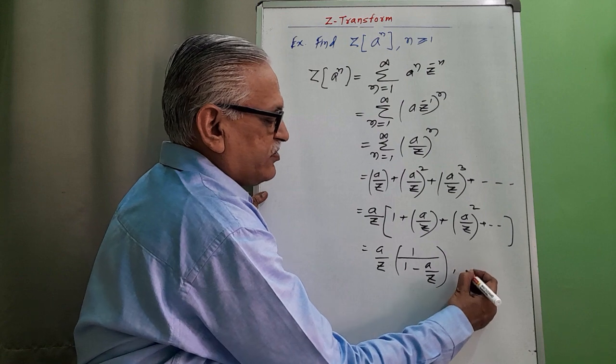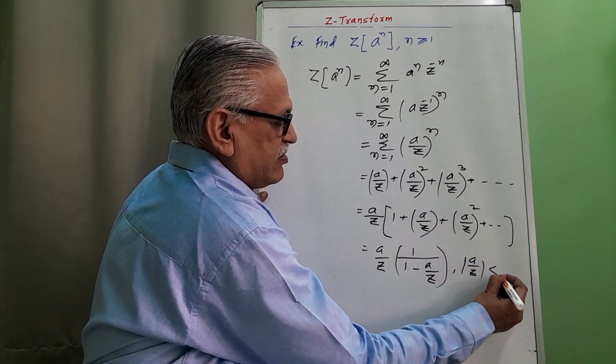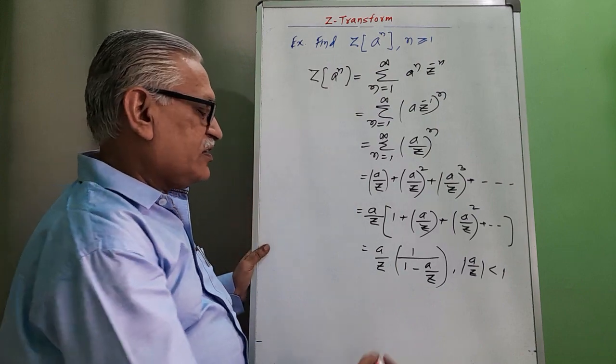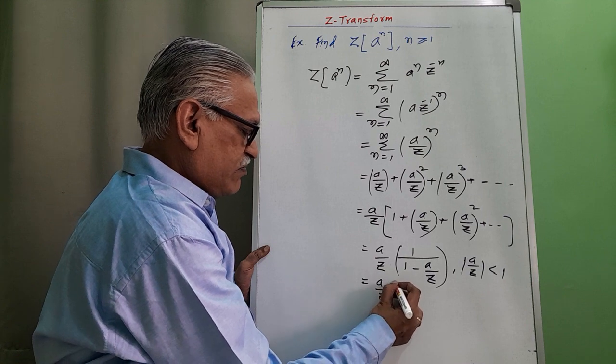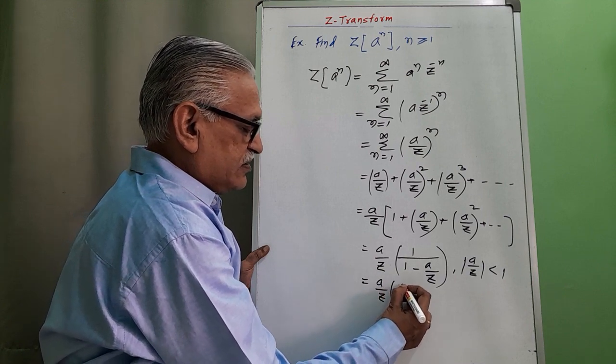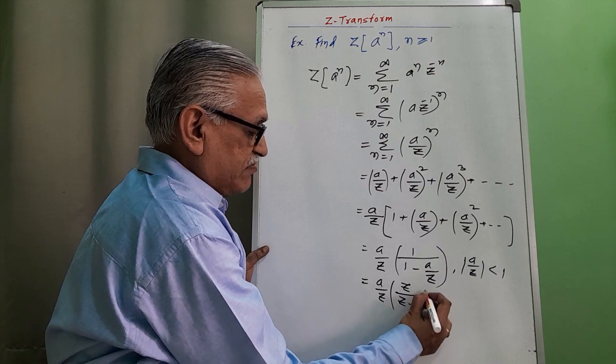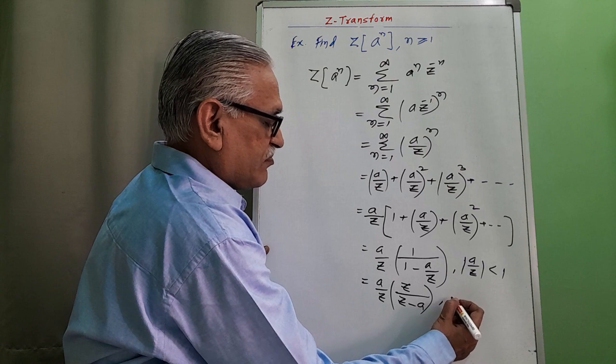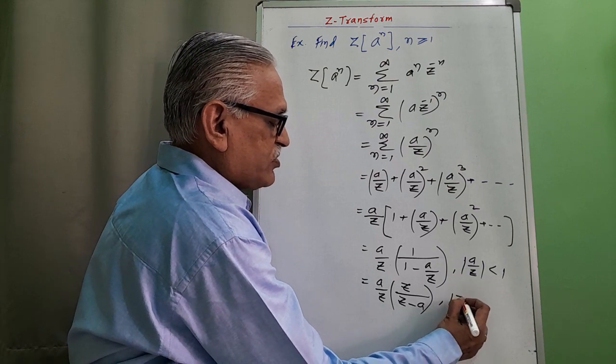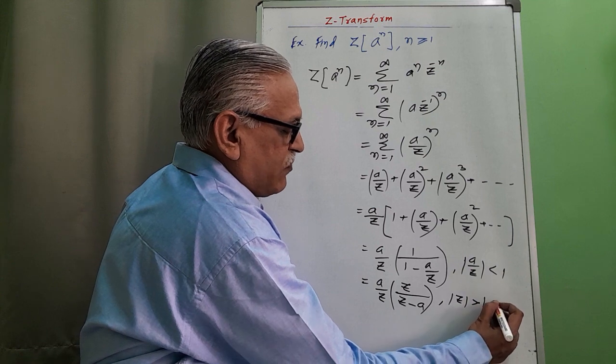And the condition is mod of A by Z less than 1. Then cross multiplying by Z, we get A by Z multiplied by Z upon Z minus A, with the condition mod Z greater than mod of A.